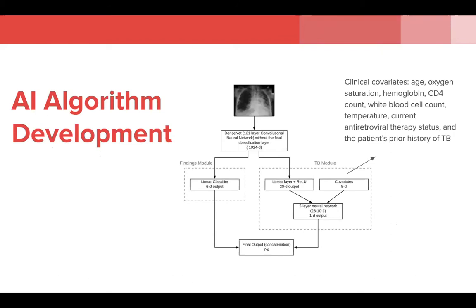We developed an algorithm to determine the likelihood of TB diagnosis. The patient's chest x-ray was first fed into a 121-layer DenseNet architecture, which had been pre-trained on CheXpert, a large dataset of chest x-rays. This was used to extract image features as a 1024-dimensional vector, which was then used as input for two separate modules. The first, the findings module, was a linear classifier which attempted to diagnose x-ray findings labeled by a trained radiologist, for example cavitation or pleural effusion. The second, which we named the TB module, consisted of a linear layer to learn 20 unsupervised image features from the original 1024 dimensions, which were then combined with eight clinical covariates selected based on availability in both datasets.